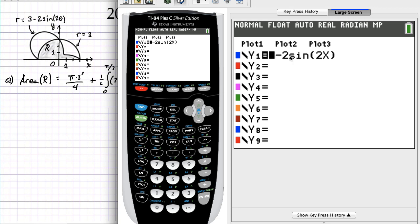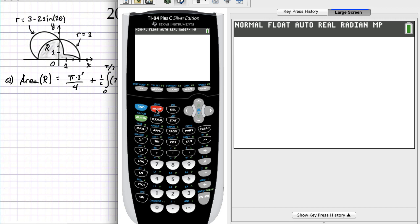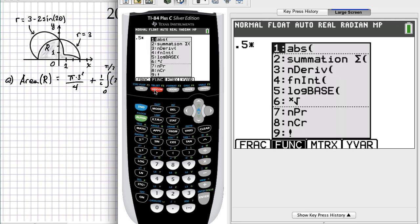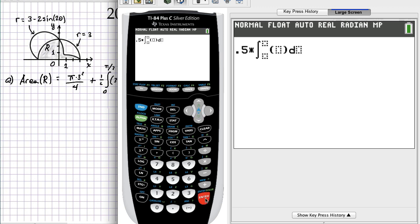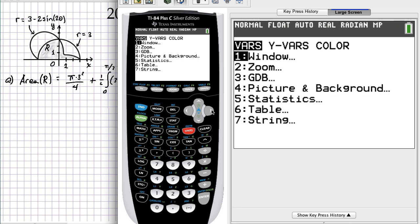I've already placed the formula into y1, and so now I need to find that integral. First it's 1/2 and then we need the integral. As some of you have pointed out, there's multiple ways to access the integral function, but here I'm using alpha window, which is F2 and then 4. So I'm going from 0 to π/2, and my function is y1, but that quantity has to be squared.